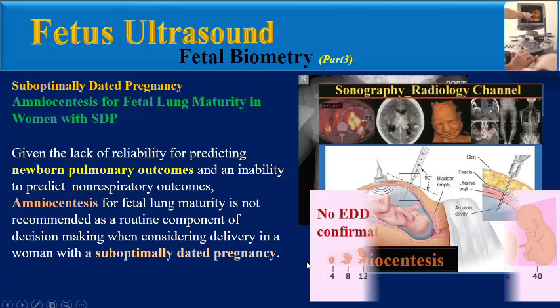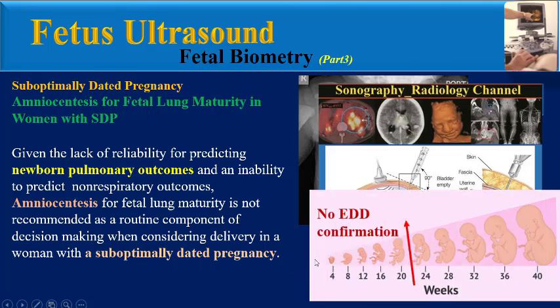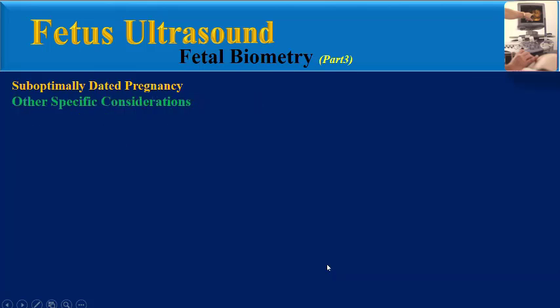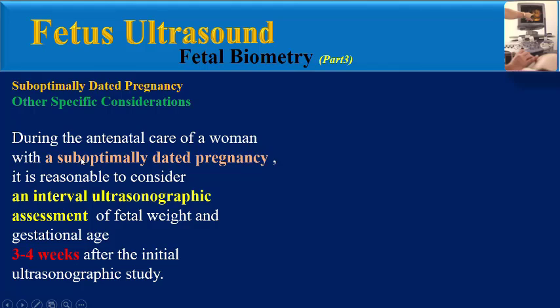Given the lack of reliability for predicting newborn pulmonary outcomes and the inability to predict non-respiratory outcomes, amniocentesis for fetal lung maturity is not recommended as a routine component of decision-making when considering delivery in a woman with a sub-optimally dated pregnancy.